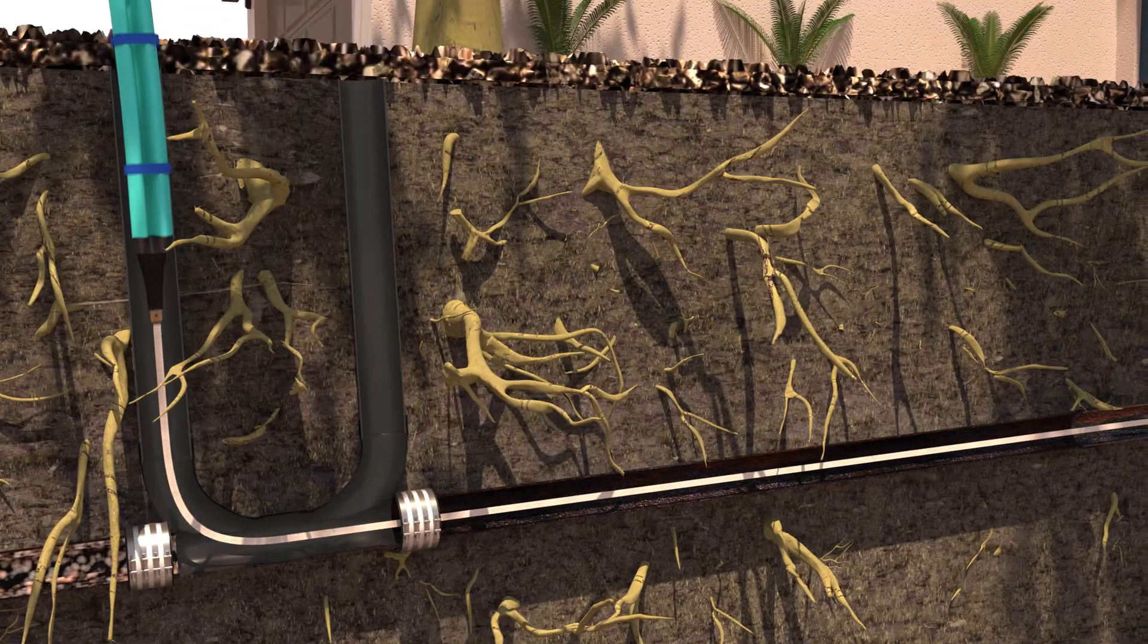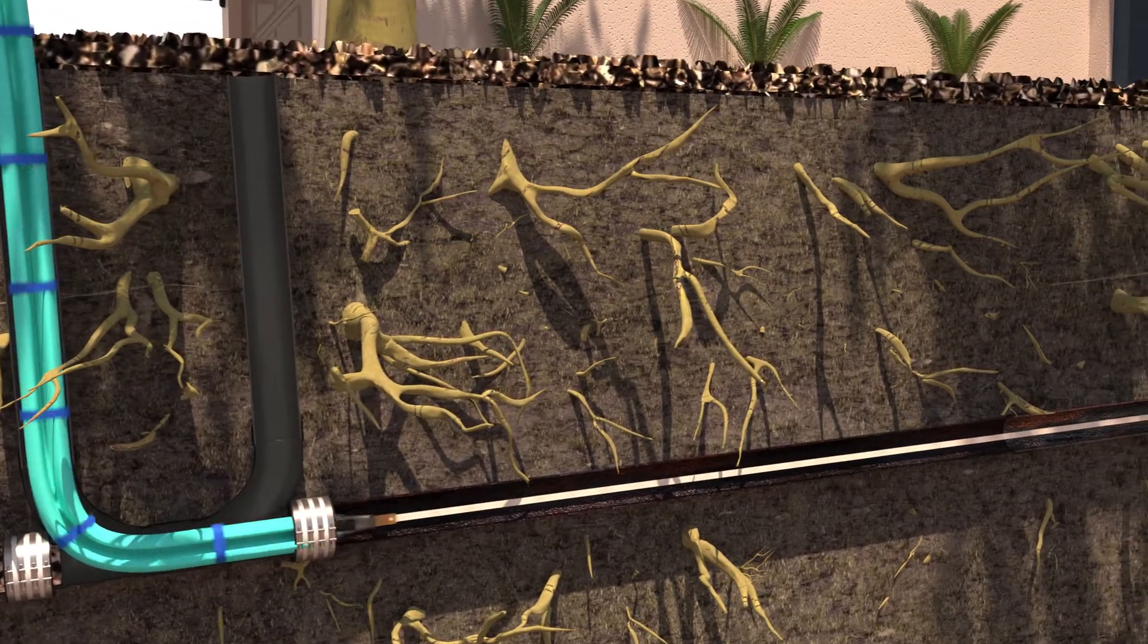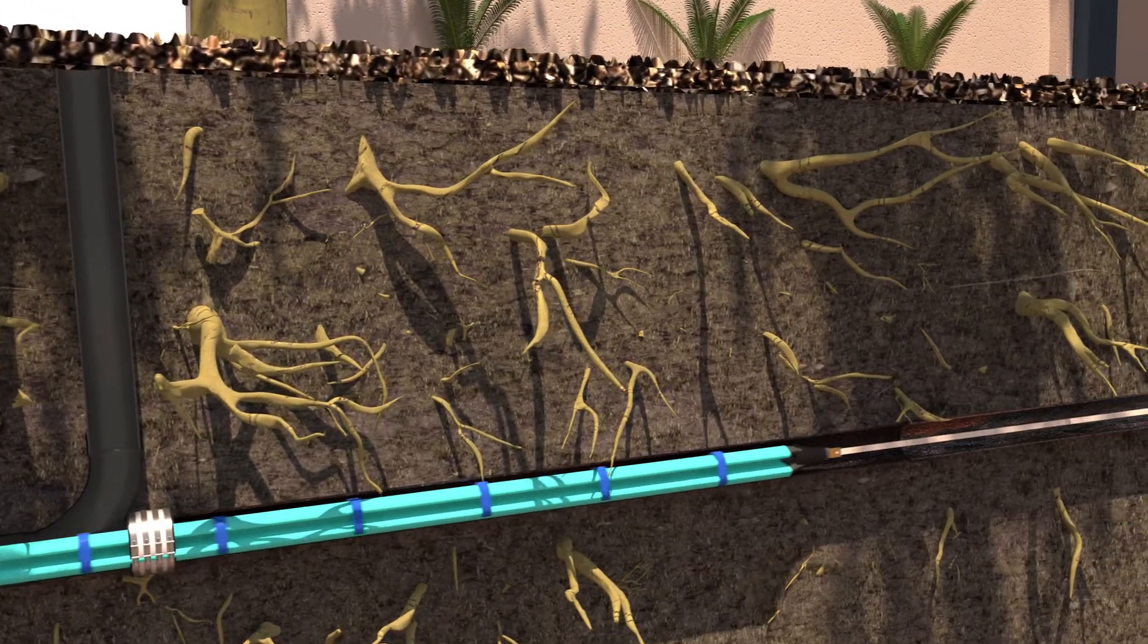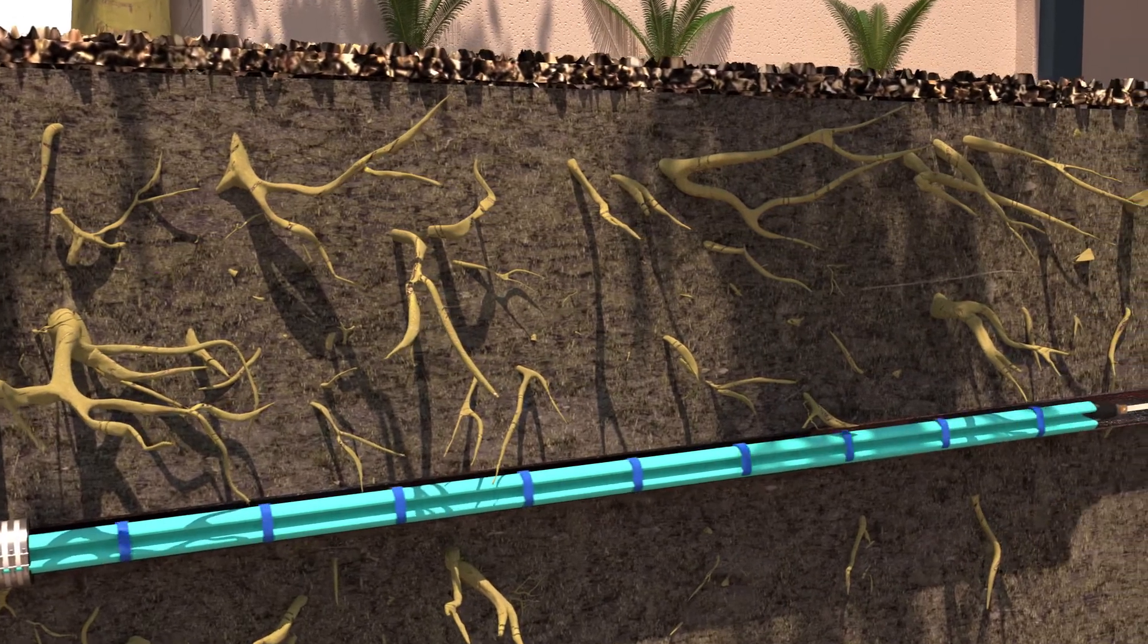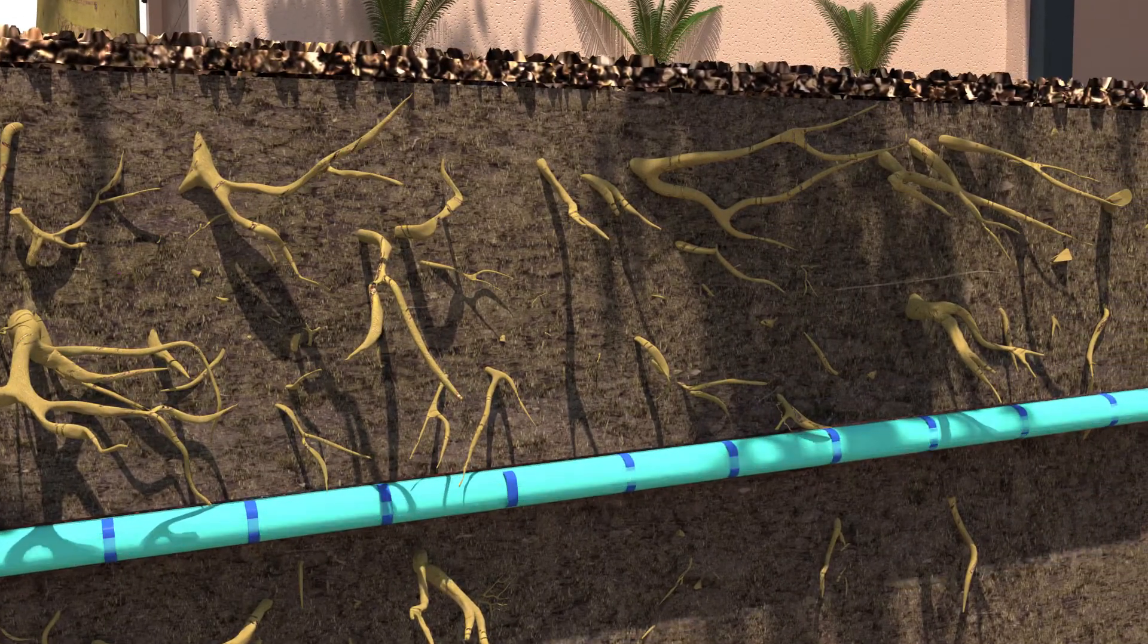Then the liner assembly is pulled into place through the access point. The bladder is filled with pressurized air, inflating the liner so that it adheres to the interior of the host pipe.